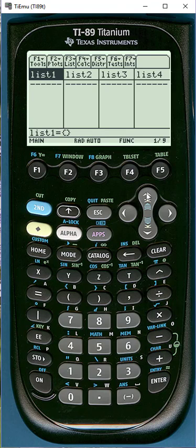If your lists are already populated, put the cursor on list 1, press the clear button, and then either enter or move the cursor right and it will clear the list.